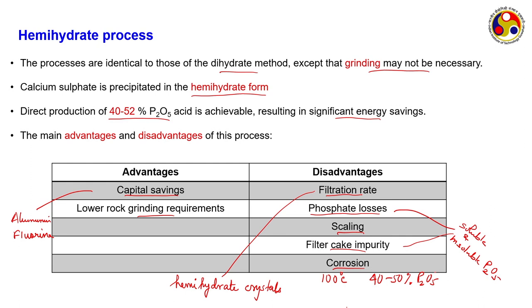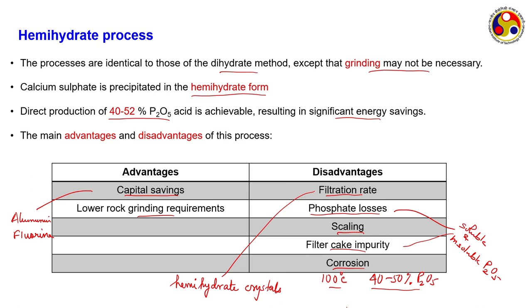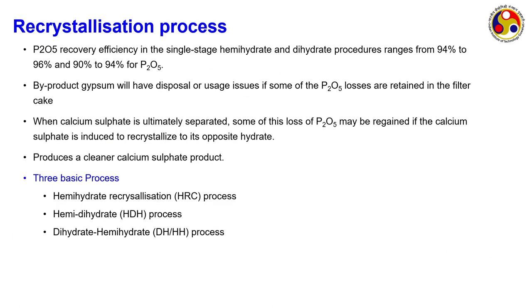Finally, there is corrosion. Equipment such as agitators and slurry pumps are susceptible because of the higher temperature, almost close to 100 degrees Celsius, and the acid concentration of around 40 to 50 percent P2O5. To summarize the disadvantages: filtration rate is reduced due to small crystals; phosphate losses due to soluble and insoluble P2O5; scaling from gypsum formation; filter cake impurity with suspended P2O5; and corrosion from intense high temperature and high concentration conditions.